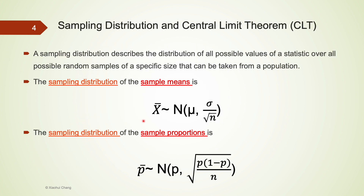Let's summarize what we have just learned from the Bunnies and Dragons video. When we gather a bunch of n objects — that's our sample — the average of these n objects, also known as the sample mean x-bar, frequently follows a normal distribution. The mean, or the center of this normal distribution, is the same as the population mean mu. The spread, or the standard deviation of this normal distribution, is smaller than the population standard deviation sigma. More specifically, it is the population standard deviation sigma divided by the square root of the sample size.